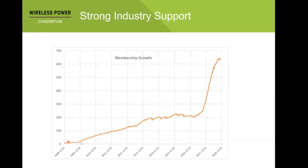This is the membership growth of the Wireless Power Consortium. It started in 2008 and launched the standard in 2010. You can see a sudden rise in membership in 2017 — this is when Apple gave up their effort to develop their own standard and eventually realized they had to use Qi. After Apple joined the consortium, all manufacturers followed the same standard.